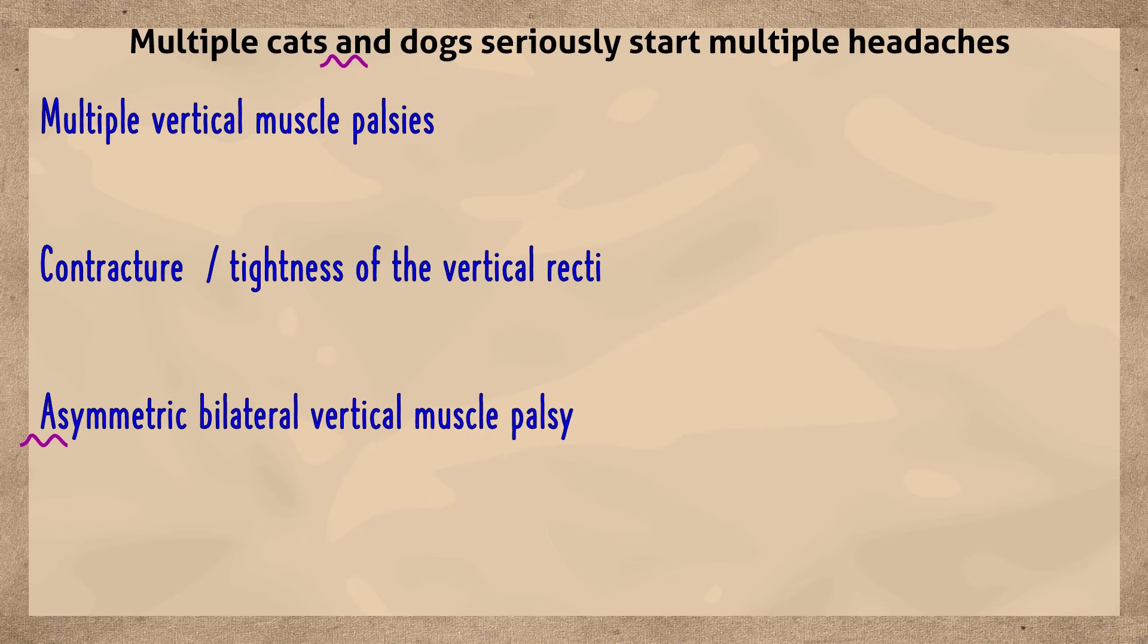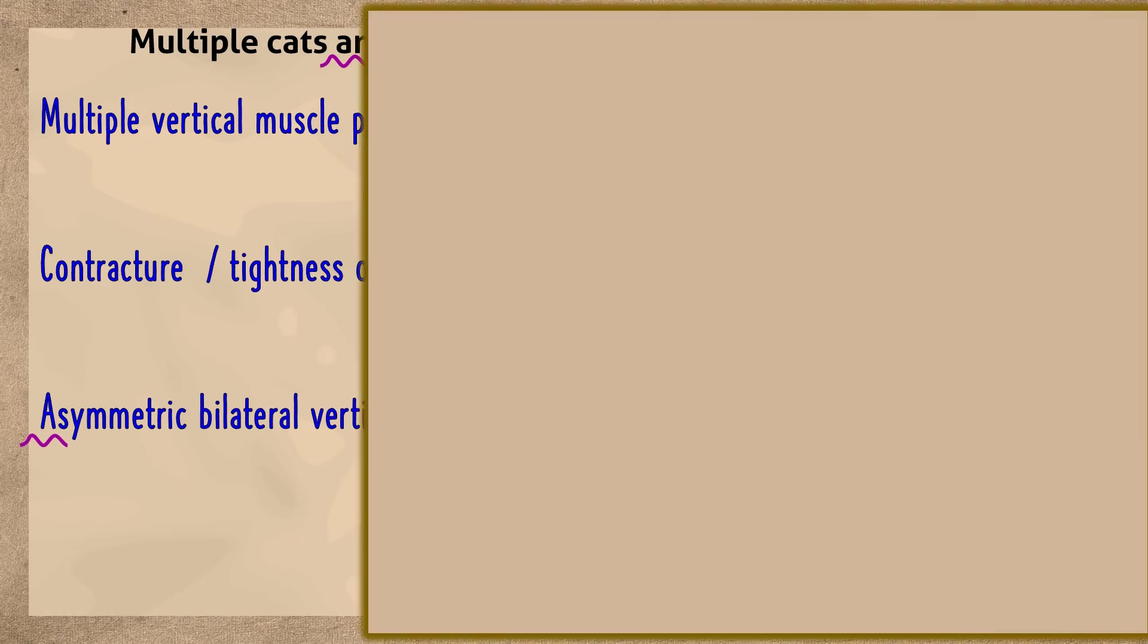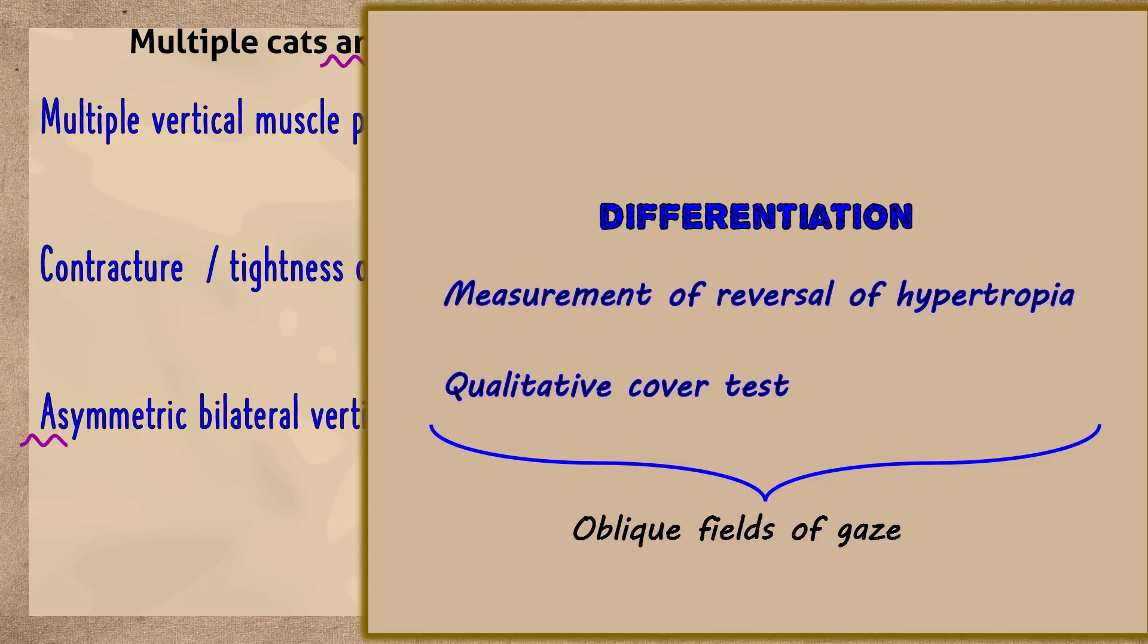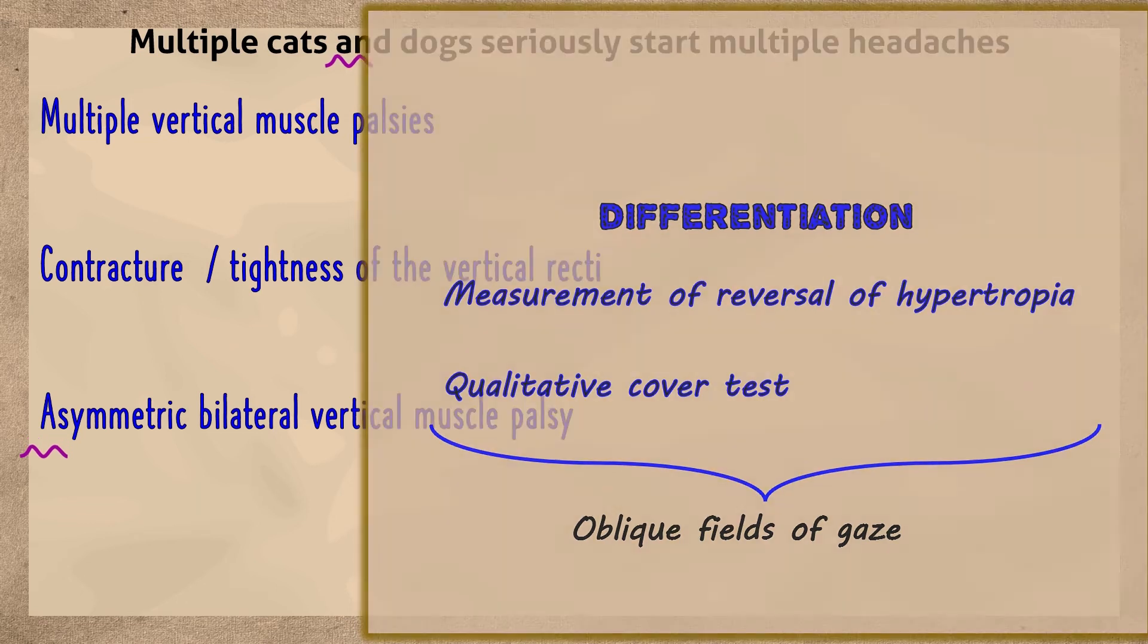Asymmetric bilateral vertical muscle palsy typically occurs in bilateral superior oblique palsy that is so asymmetrical that the paresis in the milder eye is not evident. This can be uncovered either by measurement of reversal of hypertropia or a qualitative cover test in the oblique fields of gaze. A torsional misalignment of more than 10 degrees on double maddox rod testing is particularly suggestive of bilateral fourth nerve palsies.